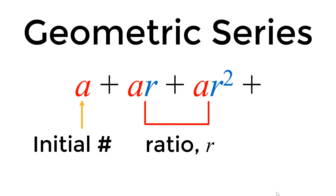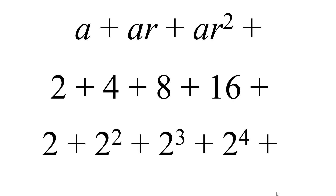The geometric series starts with an initial number a, followed by successive terms with the constant ratio r between them. So we have a + ar + ar² and so on. A simple example is an initial number 2, followed by 4, 8, and 16, and so on.